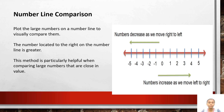Number line comparison: plot the large numbers on a number line to visually compare them. The number located to the right on the number line is greater. This method is particularly helpful when comparing large numbers that are close in value.